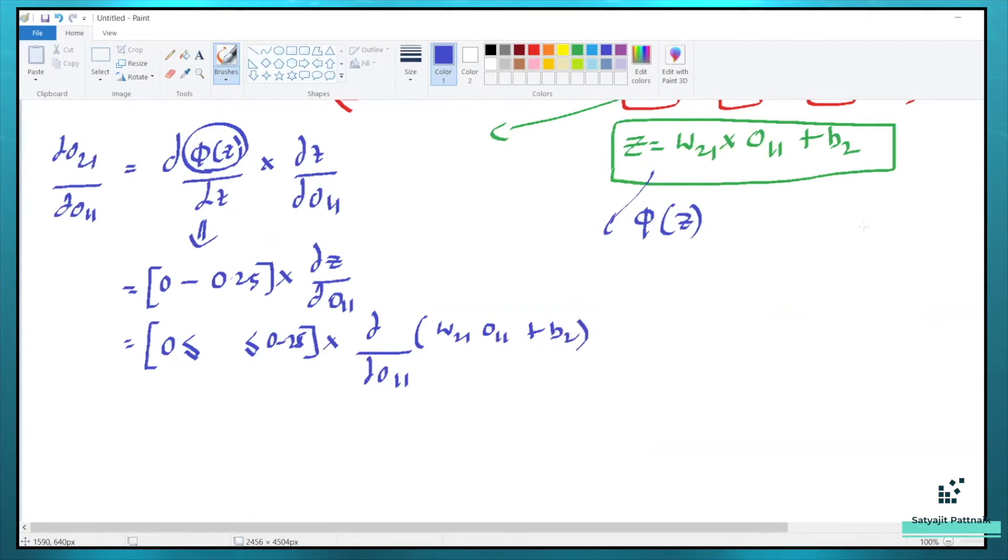We already know that if we have 5X, the derivative of 5X is nothing but 5, right? Similarly, the derivative of W21 into O11, this is nothing but something between 0 to 0.25 multiplied with, if this is X and this is a constant value, your output will be W21 plus 0 because this doesn't have X. So derivative of a constant value is always 0. So this is going to be my output, 0 to 0.25 multiplied with W21.